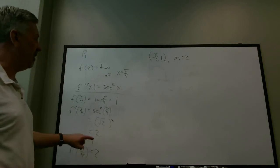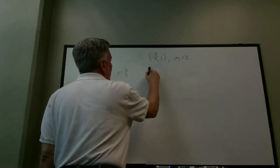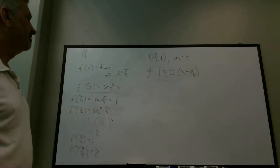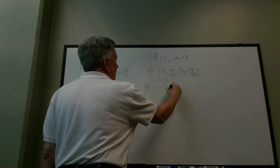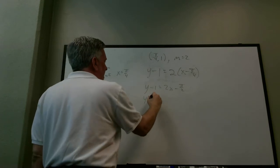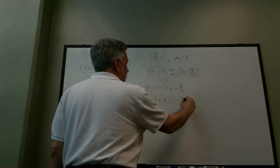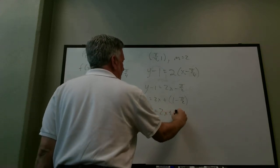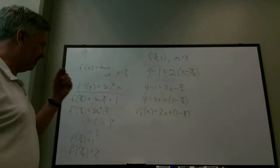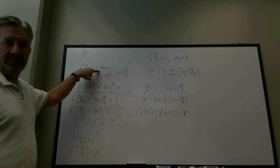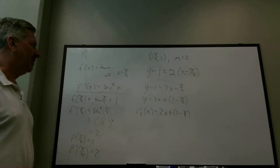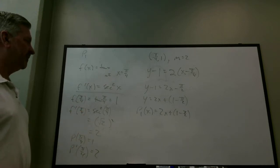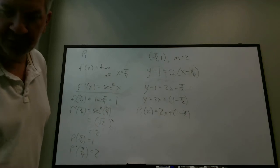Using point-slope form, y − y₁ = m(x − x₁), solving for y gives y = 2x − π/2 + 1, so p₁(x) = 2x + (1 − π/2). That constant term is (1 − π/2). This is p₁, and we designed it so that f(π/4) = p₁(π/4) and the slopes are the same at π/4.